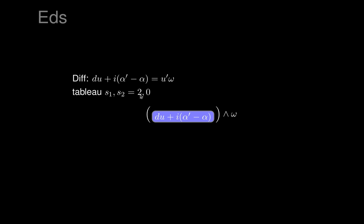We can calculate its characters. The character S1 is 2 because that's a complex-valued form with a real part and an imaginary part, so we get those two parts counted, and S2 is zero. The system is in involution because we get an integral element parametrized by a choice of U prime, an arbitrary complex number. U prime has real and imaginary parts, corresponding to the two, and S1 is two. So the system is in involution with solutions depending on two functions of one variable.